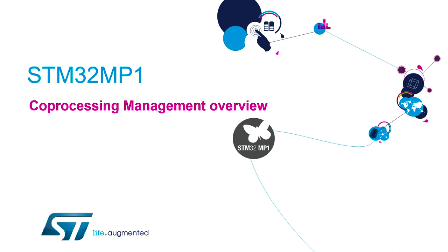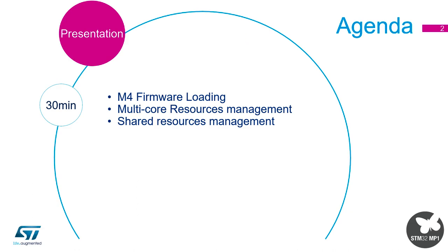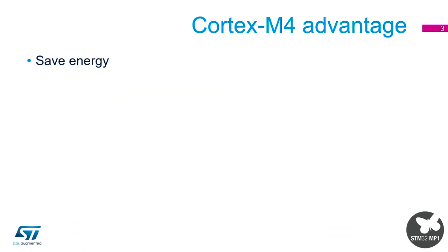In this section we're going to have a look at the management of the Cortex M4 co-processor. The M4 is classified as a co-processor because the A7 can enable and disable it as needed within an application. We'll look at how we load the firmware, how we manage the resources, and how we manage the shared resources of the MP1 device.